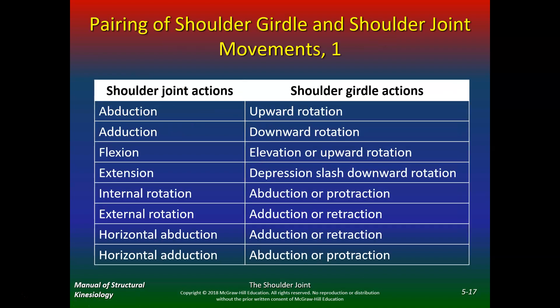Since this is a movement anatomy class, the quizzes will focus on movements, not origin-insertion. You should know the actions that occur at the shoulder joint and shoulder girdle. For abduction, you need upward rotation of the shoulder girdle. For adduction, you want downward rotation. For flexion, the shoulder girdle must elevate and upward rotate. For extension, it must depress and downwardly rotate. Internal rotation pairs with abduction and protraction. External rotation pairs with adduction and retraction. Horizontal abduction pairs with retraction, and horizontal adduction pairs with abduction and protraction. This is a great chart to memorize.